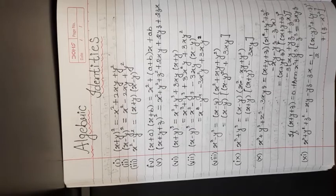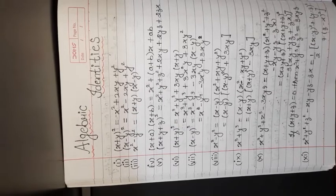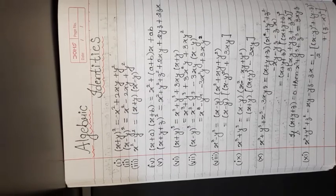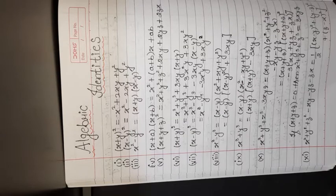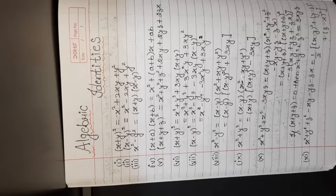Before we start exercise 2.5, first we learn about algebraic identities. An identity is an equality which is true for all values of its variables. That is, an identity is a universal truth.